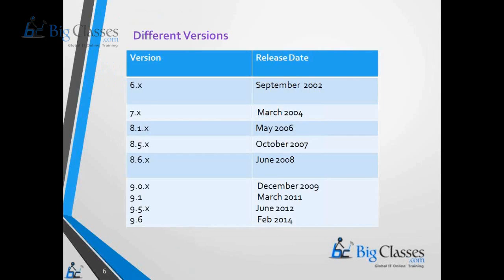There are different versions of Informatica PowerCenter. The primary version was released in 2002, version 7 was released in March, version 8 was released in 2006, version 9 was released in 2009, and the latest version is 9.6.2, which is implemented in most companies.